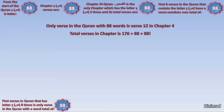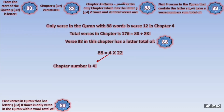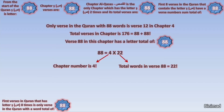It gets even more shocking when we check verse number 88 in chapter Al-Nisa and it has a total of 88 letters. Even more perplexing is that 88 equals 4 times 22, and the chapter number is 4. But what about this 22? 22 is the total number of words in this verse. It's really tempting to stop here and just marvel at this, but we have to move on.